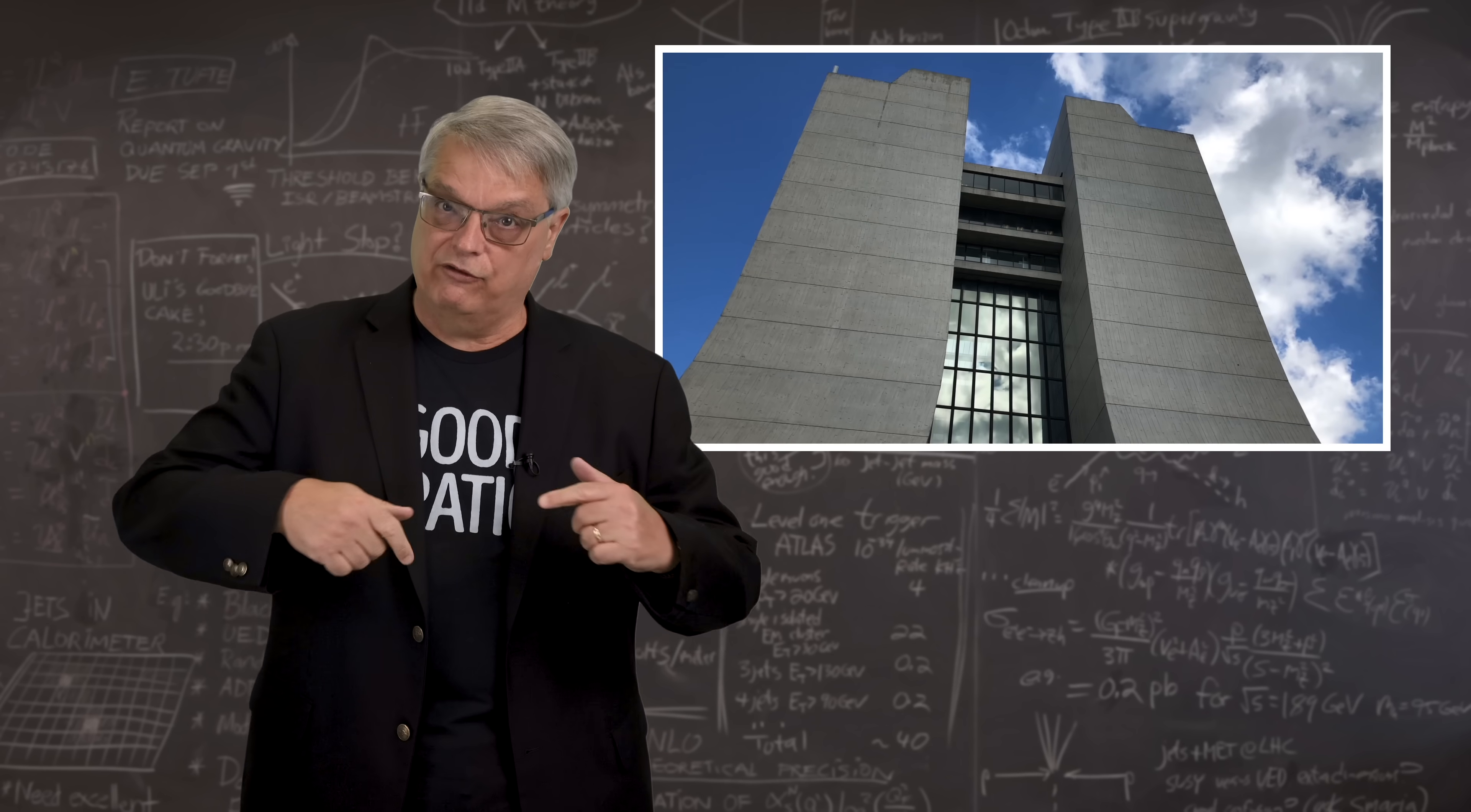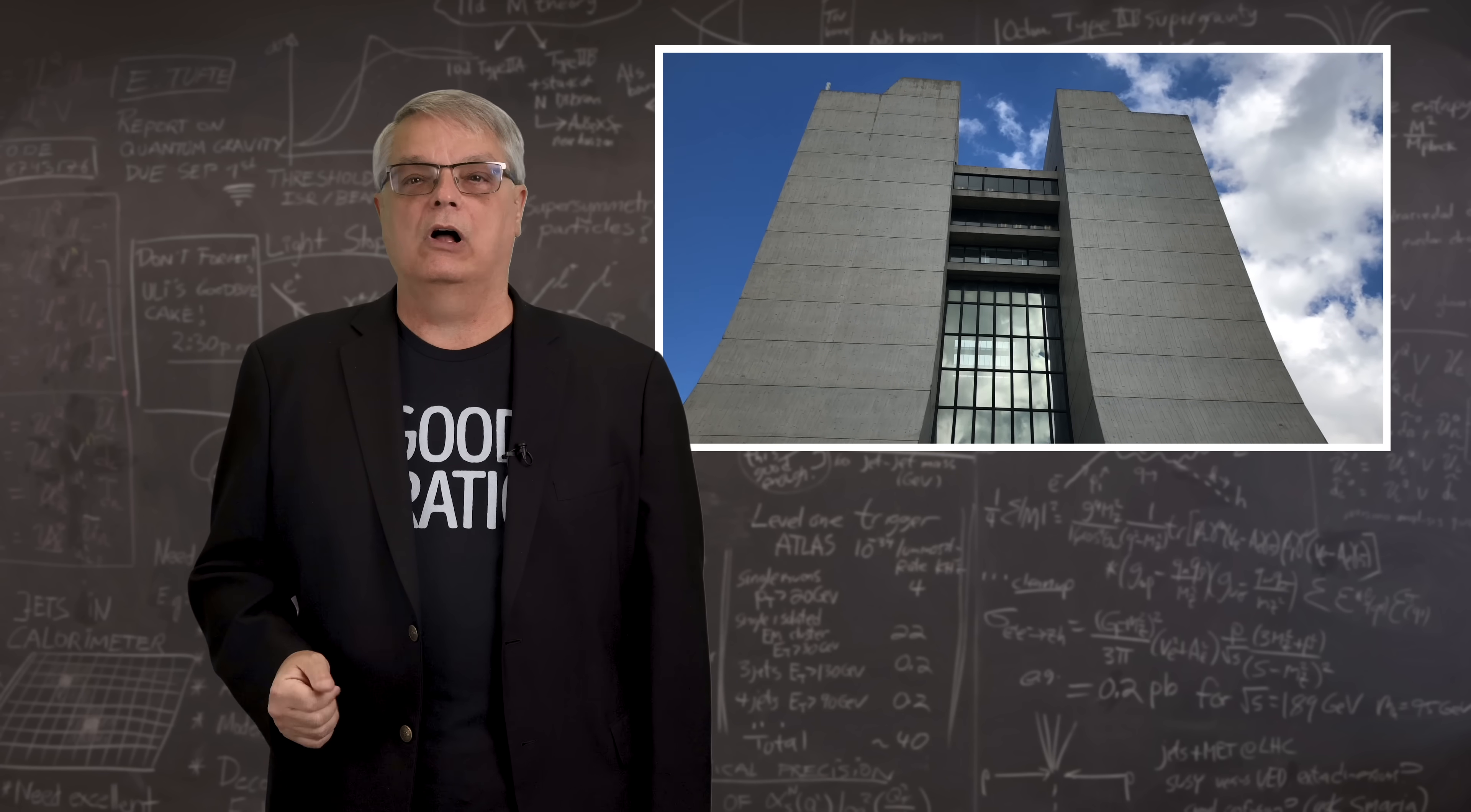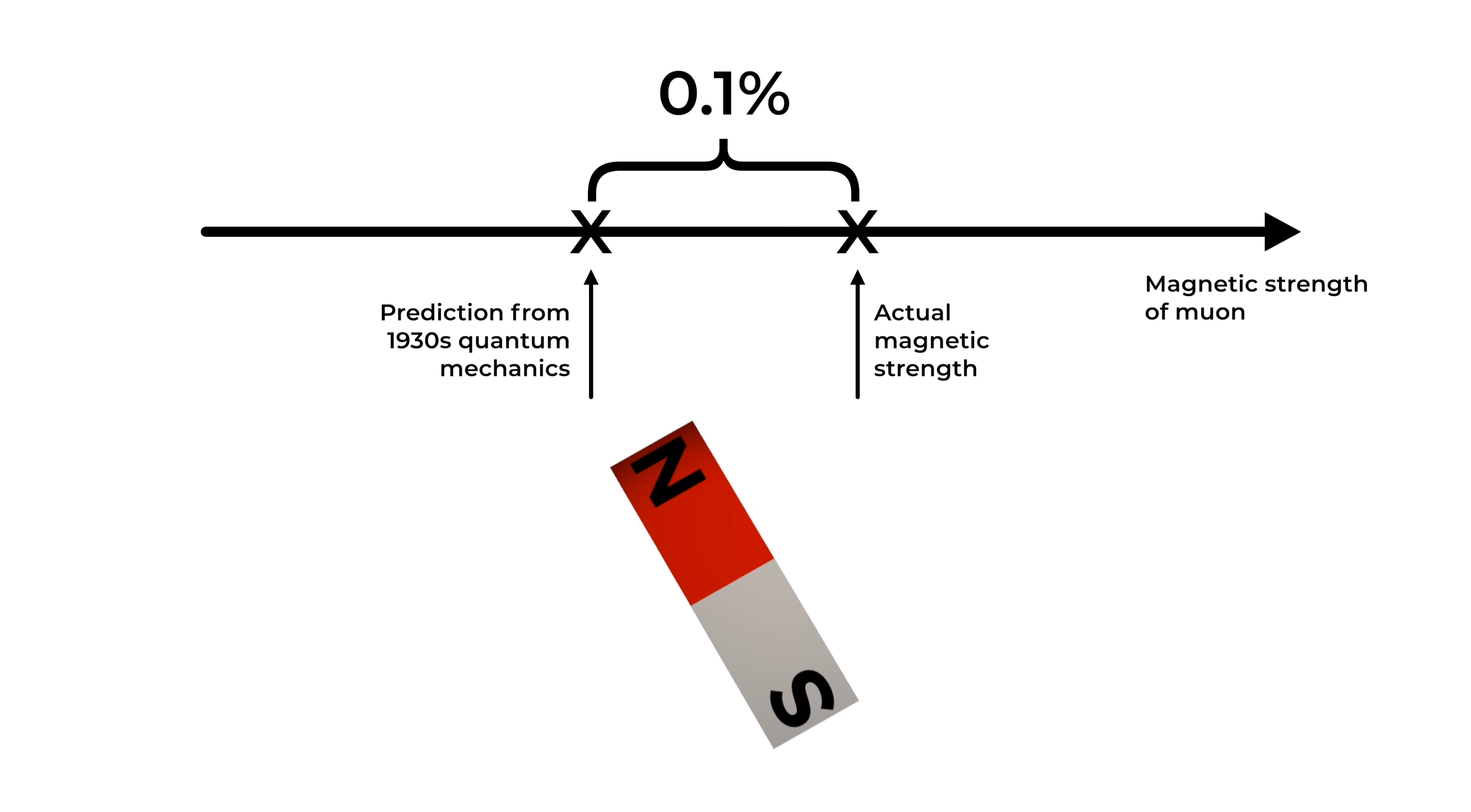And, here at Fermilab, we measure the spin properties of a subatomic particle called the muon. The particle's spin and electric charge mean the muon is also a tiny, tiny magnet. While the theory of 1930s quantum mechanics makes predictions of how strong the magnet should be, those predictions are wrong by a tiny bit, just 0.1%.